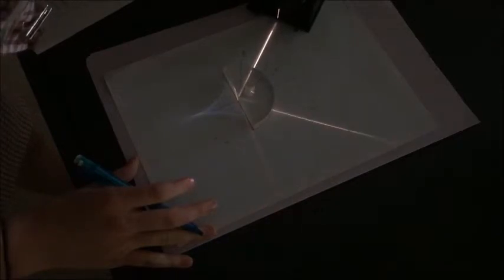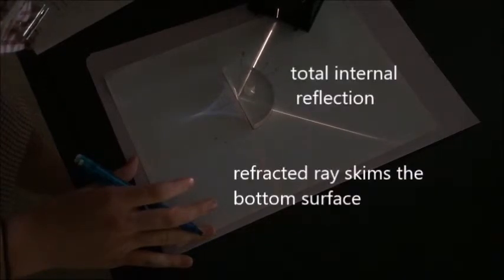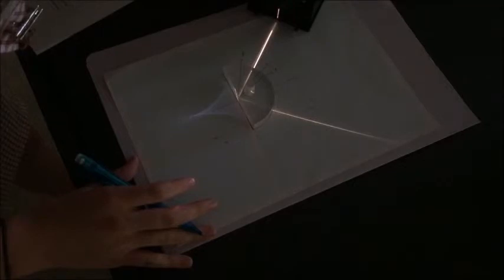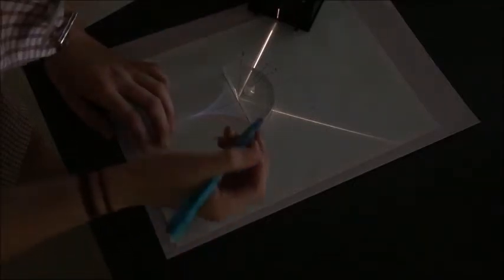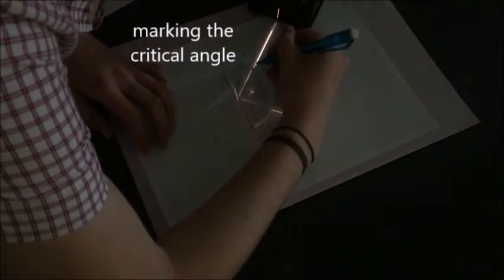Now she's got this right at critical angle and you can see the total internal reflection. There's also the refracted ray at the bottom just skimming the bottom of the block, so the refracted angle at the bottom is 90 degrees.